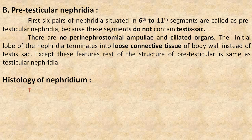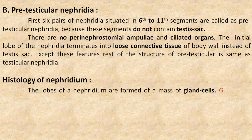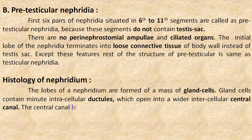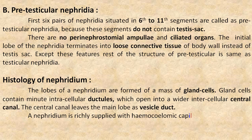Now we will see the histology of nephridium. The lobes of nephridium are formed of a mass of gland cells. These gland cells contain minute intracellular ductules which open into a wider intercellular central canal. The central canal leaves the main lobe as the vesicle duct. A nephridium is richly supplied with haemal capillaries.